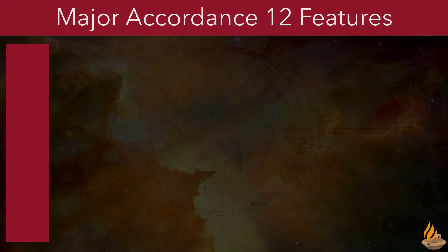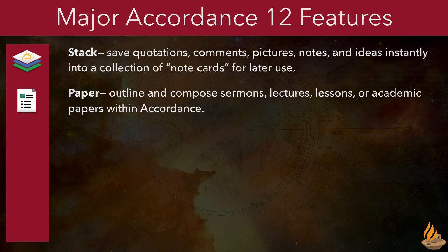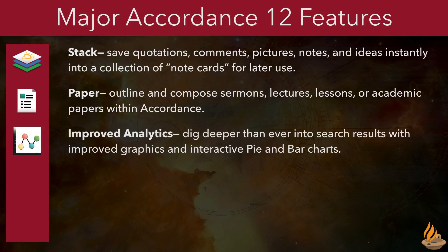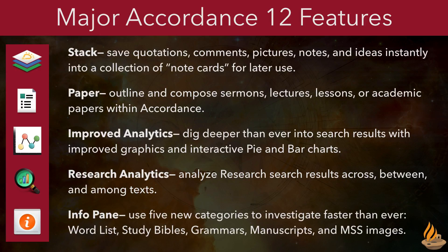Accordance 12 has five major new features. Stack, where we can save quotations, comments, pictures, notes, and ideas instantly into a collection of note cards for later use. Paper, a place to outline and compose sermons, lectures, lessons, or academic papers within Accordance. Improved Analytics, which allows us to dig deeper than ever into search results with improved graphics and interactive pie and bar charts. Research Analytics, which gives us the tools to analyze research results across, between, and among texts. And finally, Info Pane, where five new categories help us to investigate faster than ever.